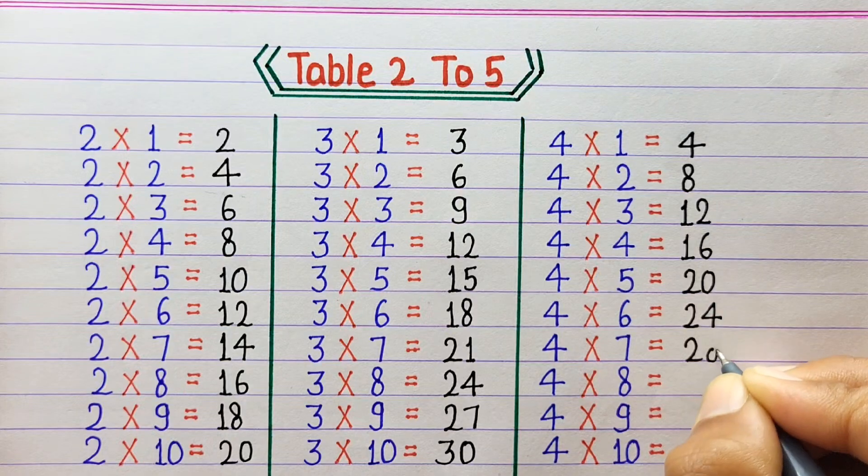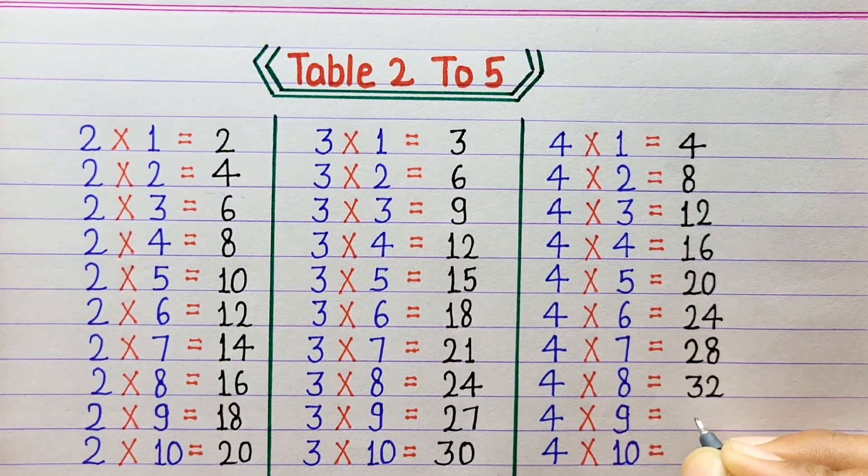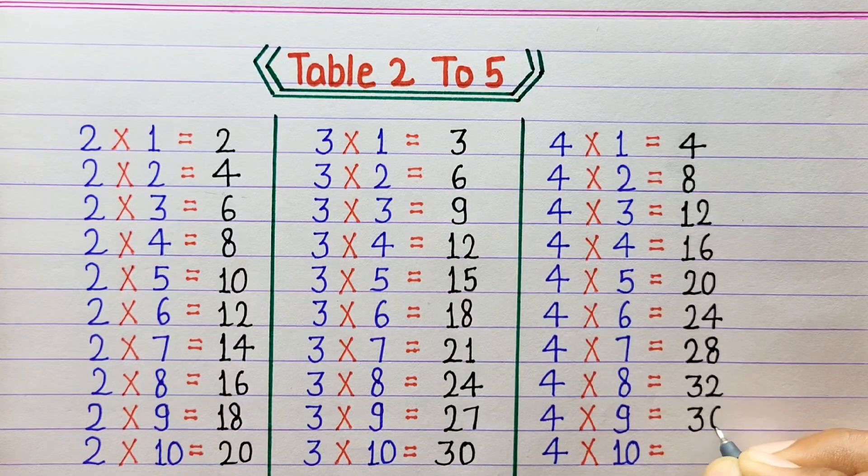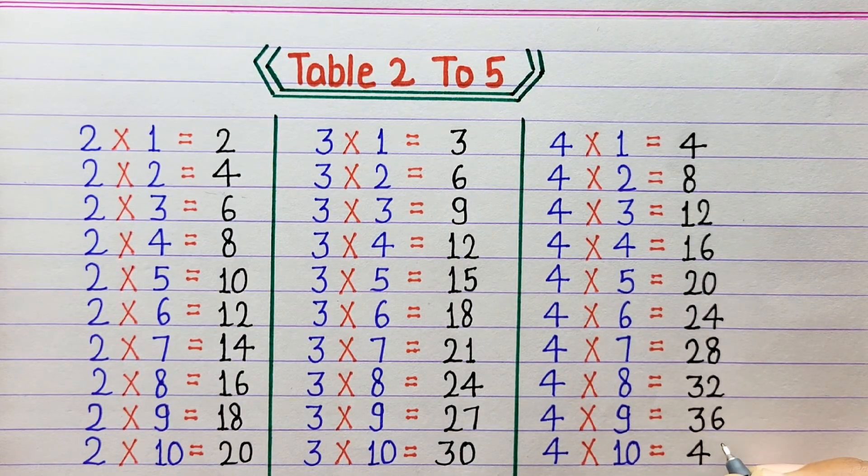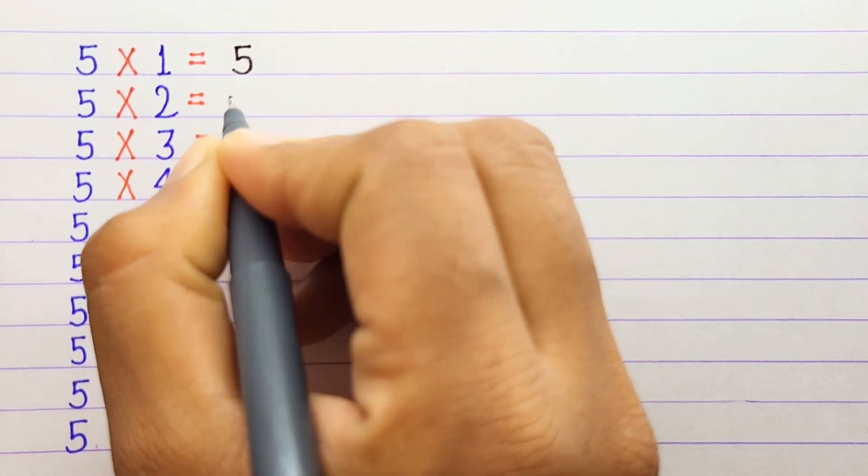4 times 7 is 28, 4 times 8 is 32, 4 times 9 is 36, 4 times 10 is 40. 5 times 1 is 5.